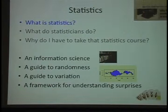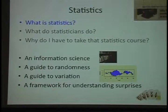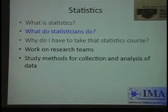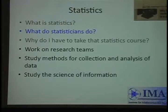What do statisticians do? Most importantly today, they work on research teams — they don't work alone. There are of course people developing theories of approximate conditional inference who work alone or with one or two others. But most statisticians work on research teams. They study different methods for the collection and analysis of data — the science of information. And they usually teach statistics, which is the part I'm going to talk about tonight.